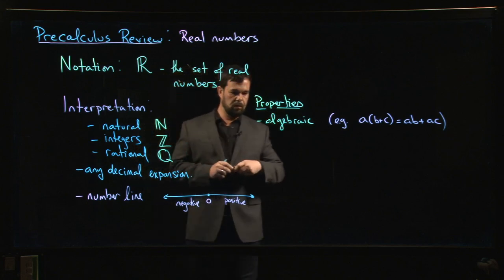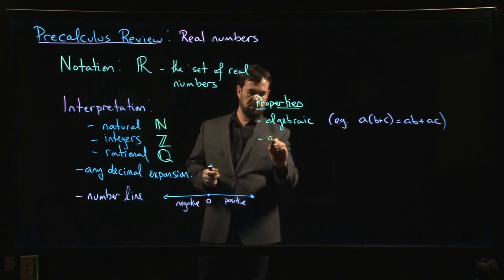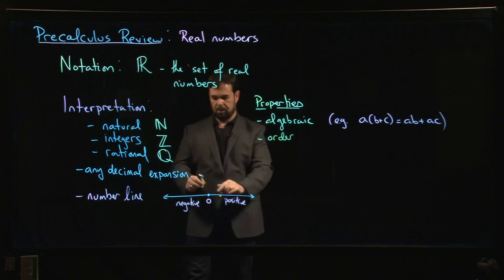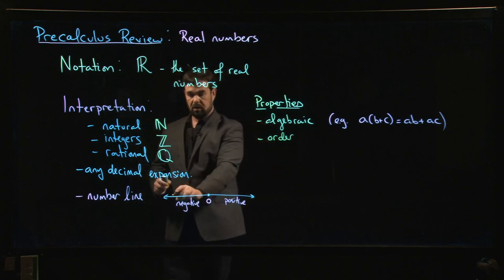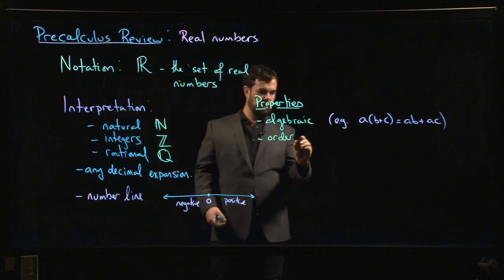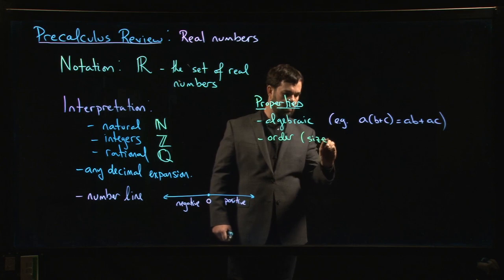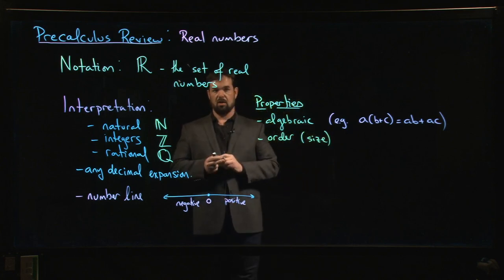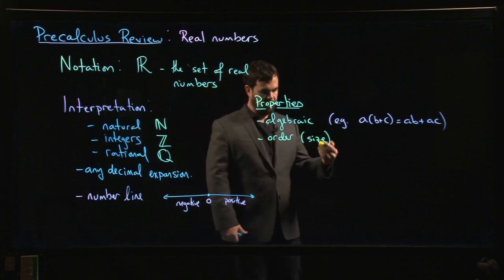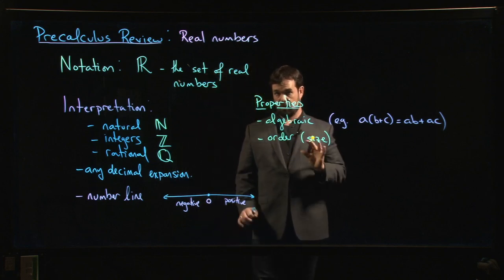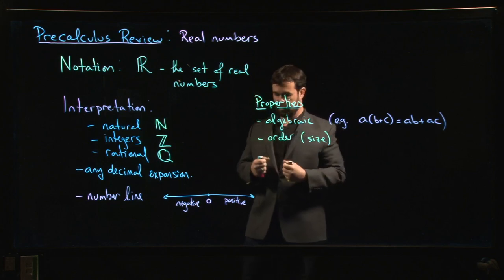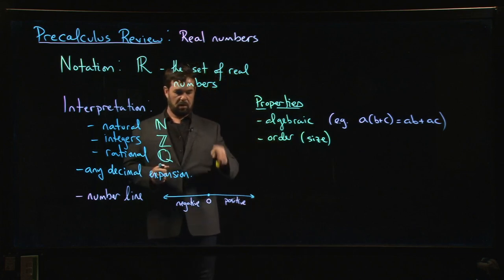But there are also order properties. Now the ordering has to do with this number line picture. Real numbers are ordered from left to right. There's this idea of increasing order, and built in here there's a notion of size. This idea that we can talk about one real number being bigger than another. In fact, mathematicians would say that the real numbers are totally ordered. Given any two real numbers, you can decide which one is bigger than the other. Given any three, you can put them in order – small, medium, big.